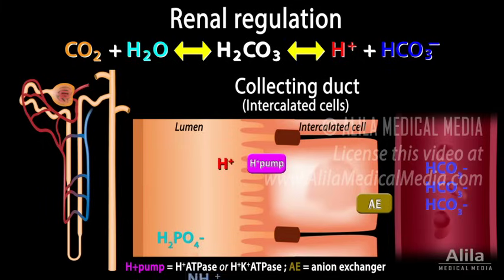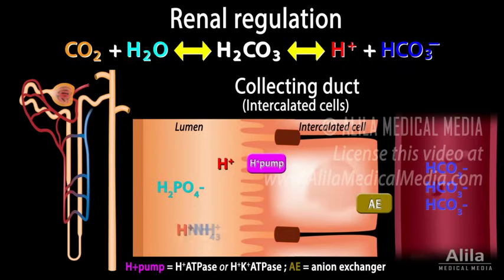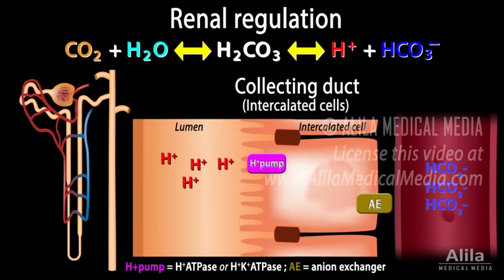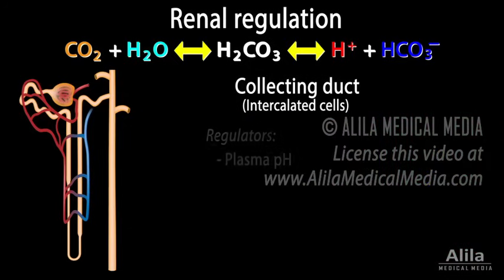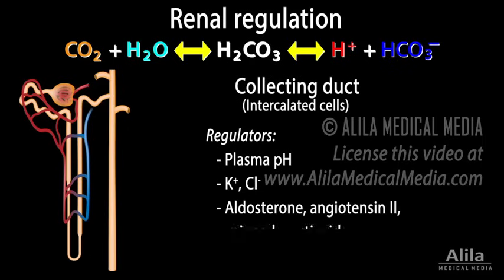The ammonia buffering system is particularly important because, unlike phosphate — which is filtered in fixed amounts from the plasma and can be depleted during high acid loads — ammonia production is regulated in response to changes in acidity, and its concentration may increase several-fold when necessary. Blood pH is the main regulator of acid excretion, but potassium, chloride concentrations, and several hormones also play important roles.